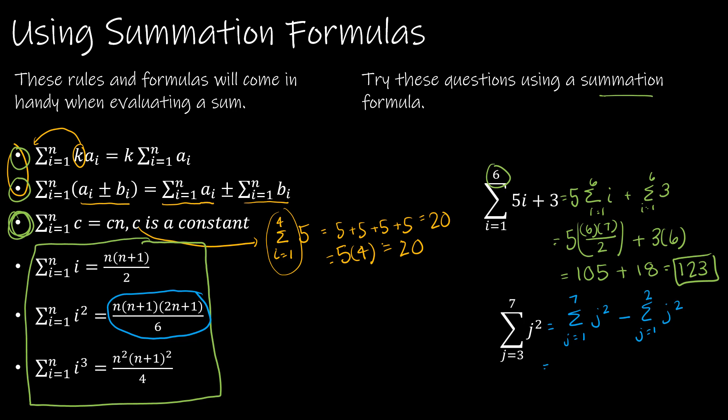So if I do it this way, this is 1 to 7. So now I'm going to be using this function twice, and the first time I'm using it with a 7. So this is 7 times 8 times 2 times 7 plus 1, which is 15, divided by 6. And I'm going to evaluate that. And I'm going to subtract. And now notice I'm going to use 2 as n. So this is 2, 2 plus 1, 3, 2 times 2 plus 1, 5, 2 plus 1, 5 divided by 6.